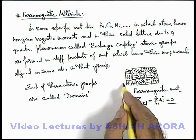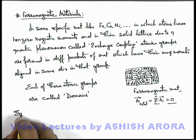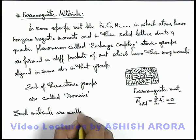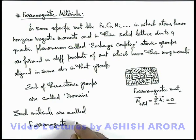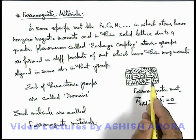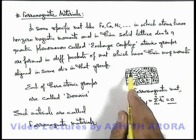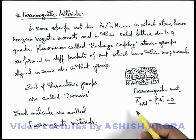So in a domain, all dipole moments are aligned in a specific direction. Such materials are called ferromagnetic materials. The most important thing about ferromagnetic materials is that these are highly sensitive to an externally applied magnetic field. When a magnetic field is applied, with a very small field, due to exchange coupling all domains align in the direction of the field. That we'll study in the next section about magnetization of ferromagnetic materials.